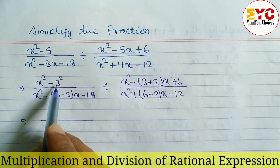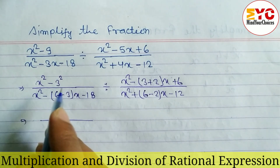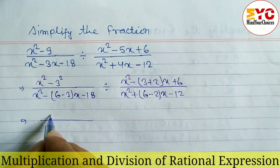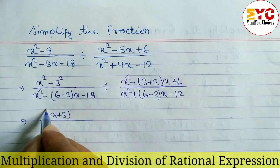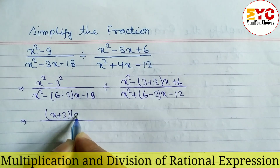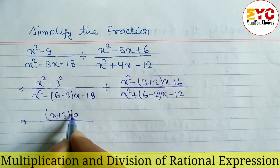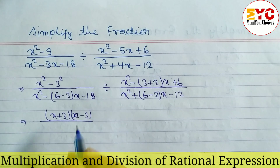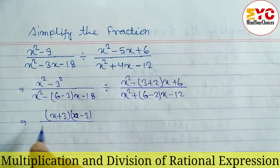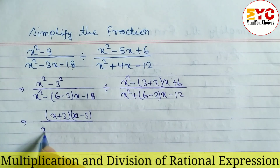Now we can see the expression x squared minus 9 is in the form of a squared minus b squared. The formula is (a + b)(a − b), so we can write (x + 3)(x − 3).